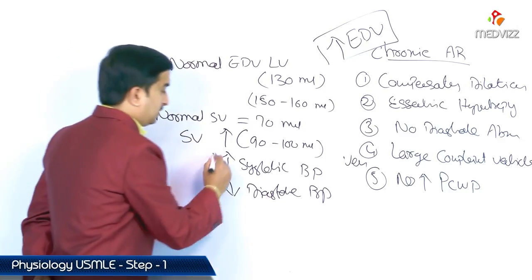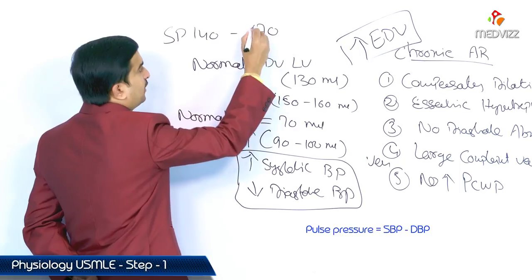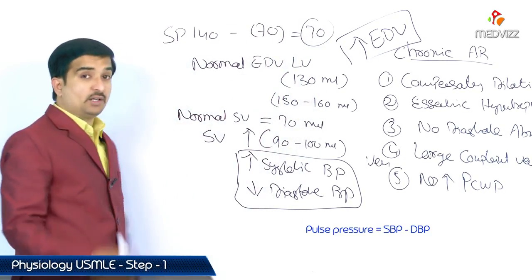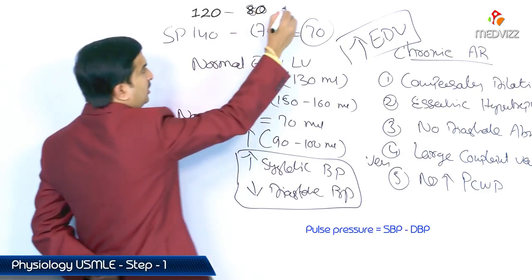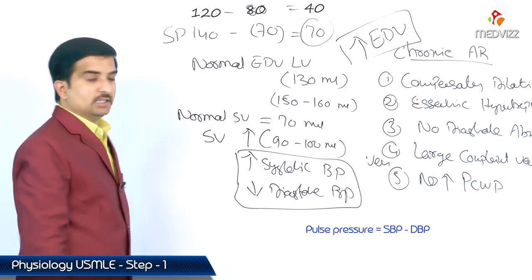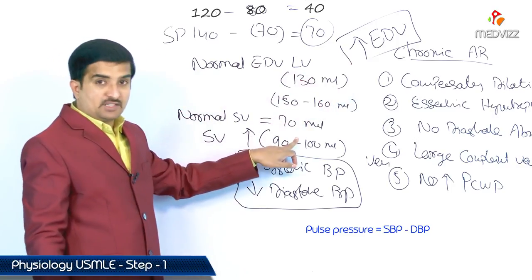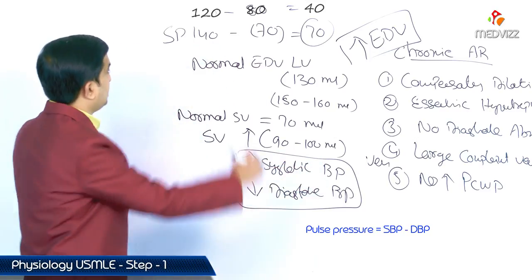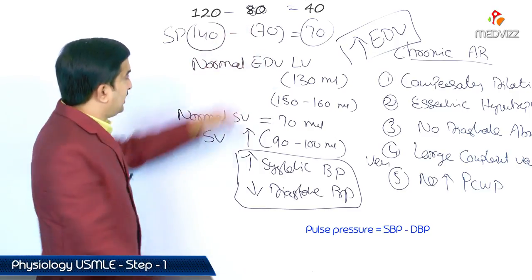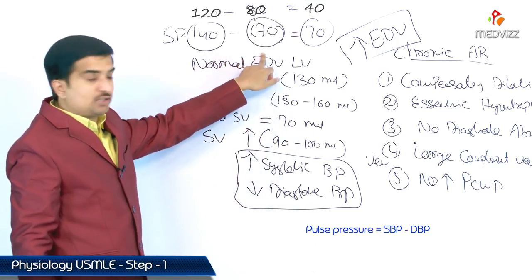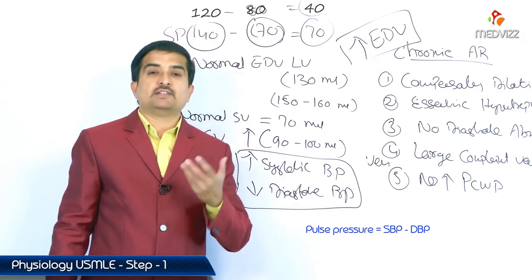For example, systolic pressure may be 140 mmHg and diastolic pressure 70 mmHg, giving a pulse pressure of 70. Normal pulse pressure is 40 (120 systolic minus 80 diastolic). In chronic aortic regurgitation, systolic BP increases to 140 (from 120) and diastolic BP decreases to 70 (from 80), so pulse pressure increases from 40 to 70.